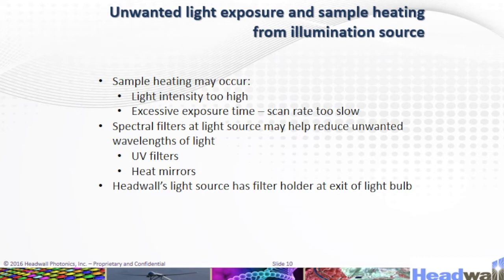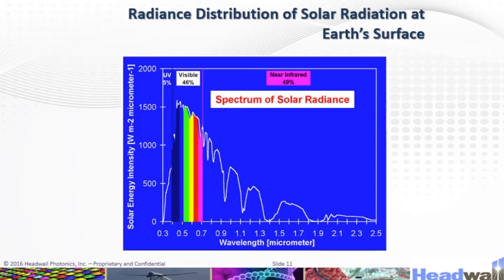Unwanted light exposure and sample heating can occur from the illumination source. Sample heating may occur if light intensity is too high, exposure time is excessive, or scan rate is too slow. A spectral filter at the light source may help reduce unwanted wavelengths of light. Headwall light sources have a filter holder at the exit of the light bulb. Approximately half of solar radiation is in the near-infrared, the other half is mostly in the visible, and about 5% is in the UV. The energy in the mid-wave and long-wave infrared is a very small percentage of total solar energy.